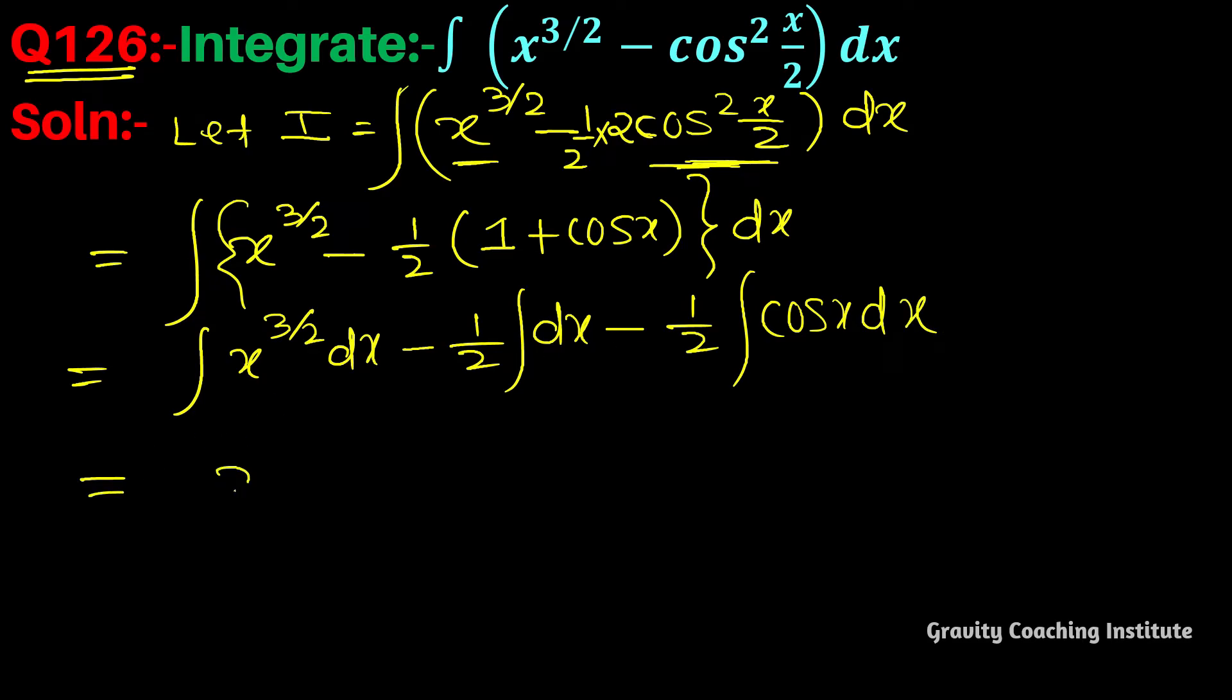So here we have x to the power 5 upon 2, or this is the reciprocal 2 upon 5. Here we have half x minus 1 upon 2 cos x, sin x plus C, which is the required answer.